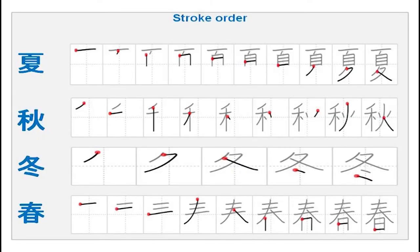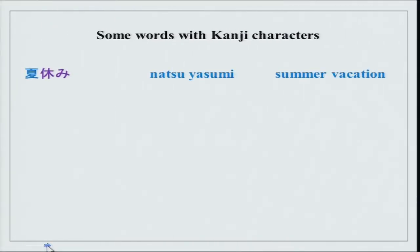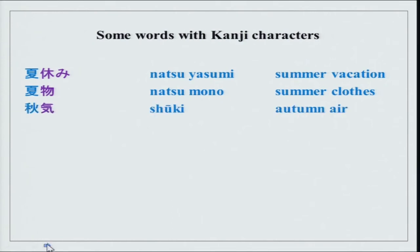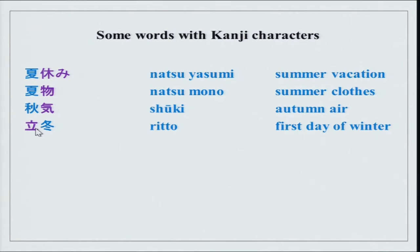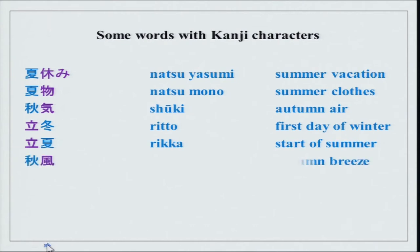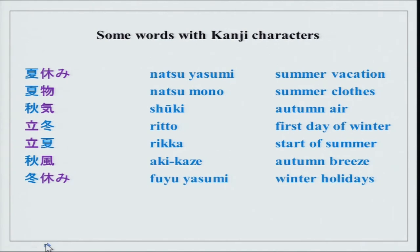There are some kanji compound words here. The kanji we have done — words you know. Natsu yasumi, natsumono which is summer clothes. Then shuuki meaning autumn air. Rittou is the first day of winter — this character also means to stand up, it is simple to remember. Rikka is the start of summer. Akikaze is autumn breeze and fuyu yasumi is winter holidays. These are some words you can use in sentences.